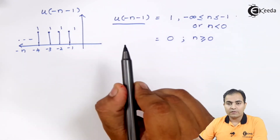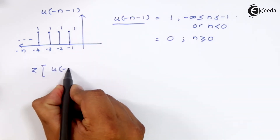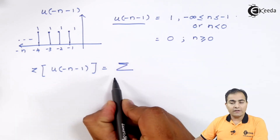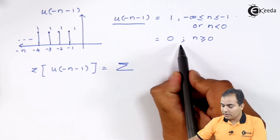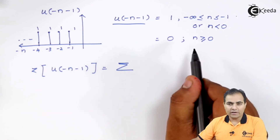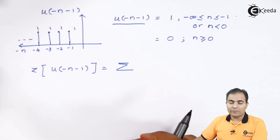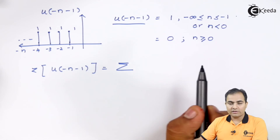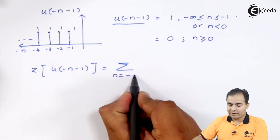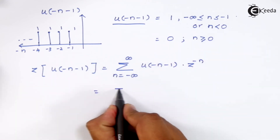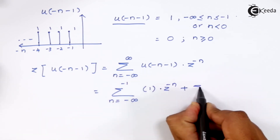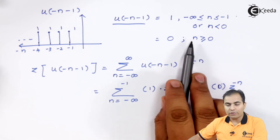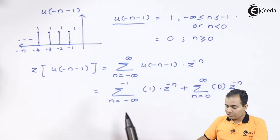We are going to apply the Z-transform of u(−n − 1). The time limit can be written as minus infinity to infinity, but since from n = 0 to infinity the function has amplitude 0, and from minus infinity to minus 1 it has amplitude 1, substituting these values: the 0-amplitude part drops out (0 × anything = 0), and we solve only the part from minus infinity to minus 1 with amplitude 1.